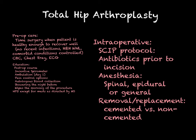For anesthesia, spinal or epidural are normally preferred — these reduce the likelihood of complications compared to general anesthesia. General anesthesia is used when a spinal or epidural can't be achieved. Spinals and epidurals are great — the patient could be sedated but might be awake, reducing many complications associated with general anesthetic. After the patient is well anesthetized and the level of anesthesia is tested, they go in and remove the diseased joint and replace it. Sometimes the metal used is cobalt.